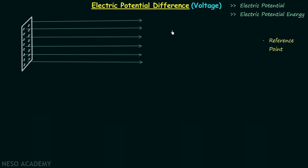In the last lecture we saw why electric current is a scalar quantity. In this lecture we will understand what is electric potential, what is electric potential energy, what is electric potential difference or voltage, and some other important points. I will begin with defining electric potential difference or voltage.